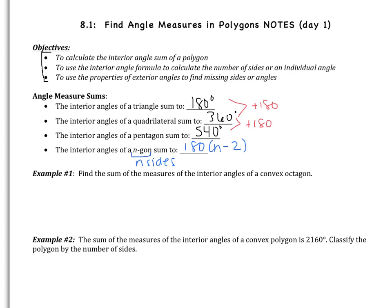That formula is always true. It applies to the previous examples: a triangle has three sides, so 3 minus 2 multiplied by 180 gives us 180. Quadrilateral: 4 minus 2 multiplied by 180 gives us 360. So to find what all the interior angles sum to, take the number of sides, subtract 2, and multiply by 180.